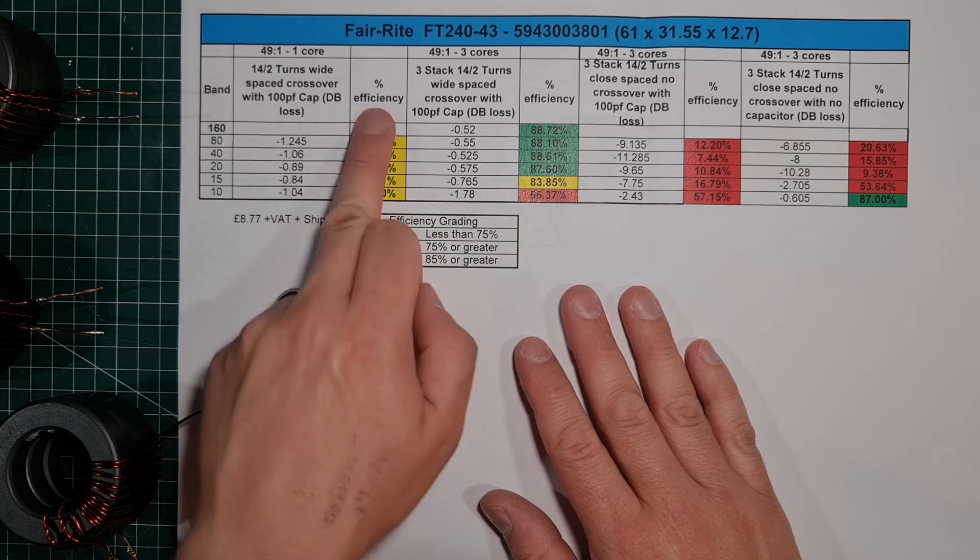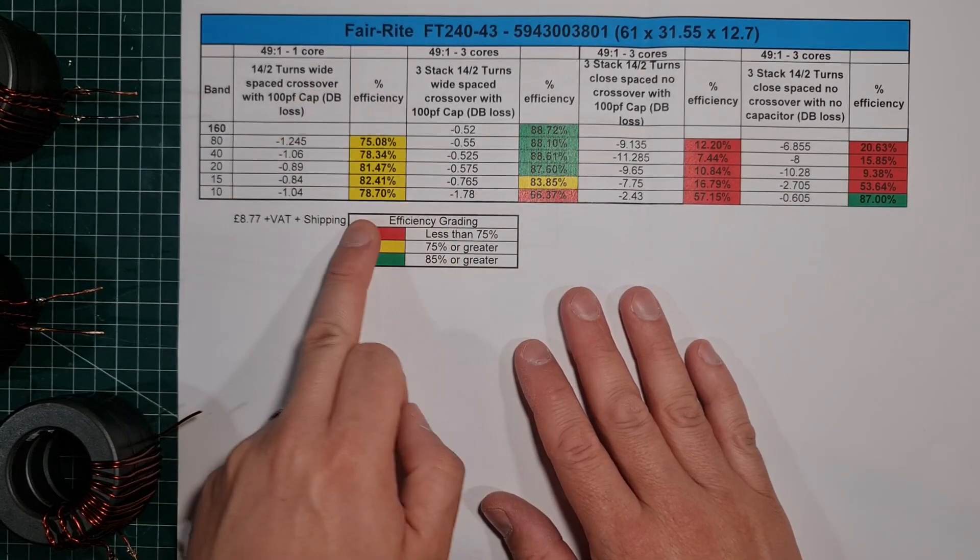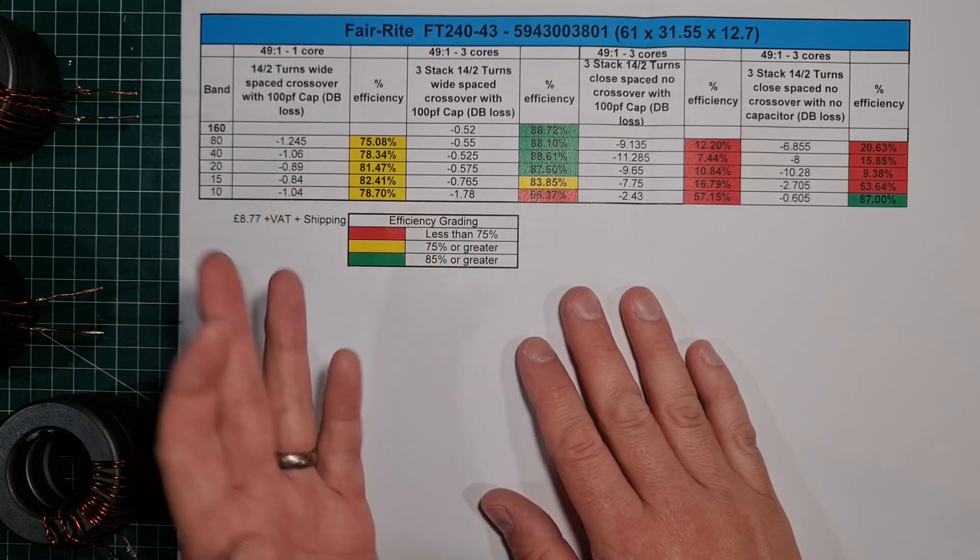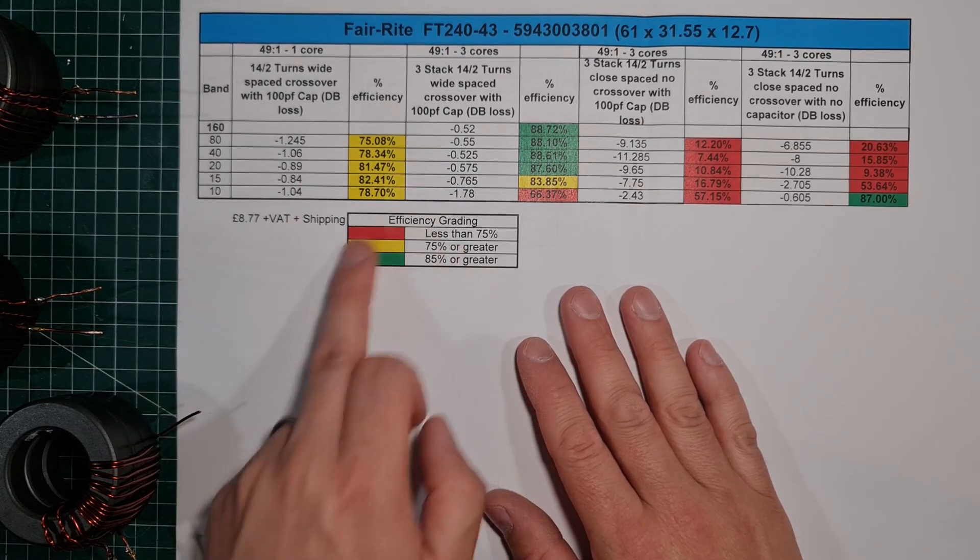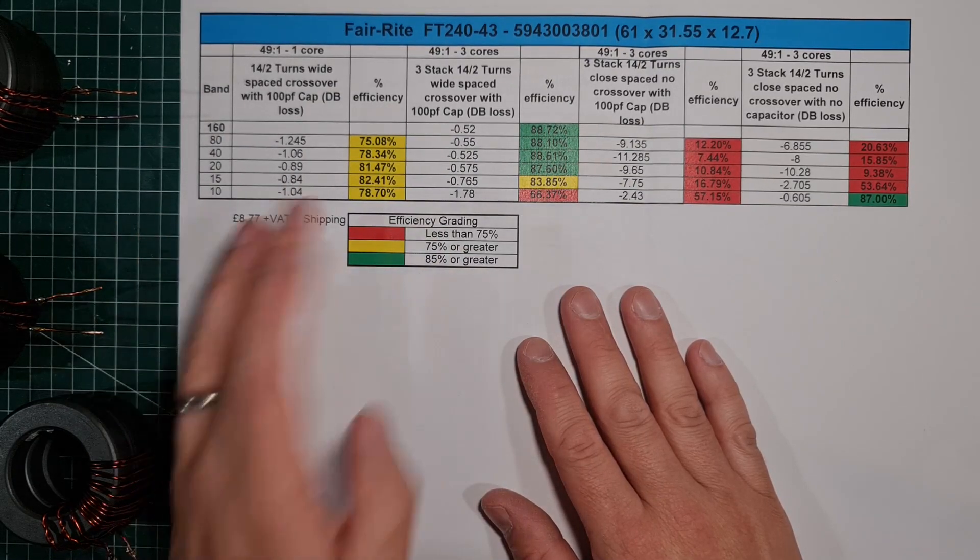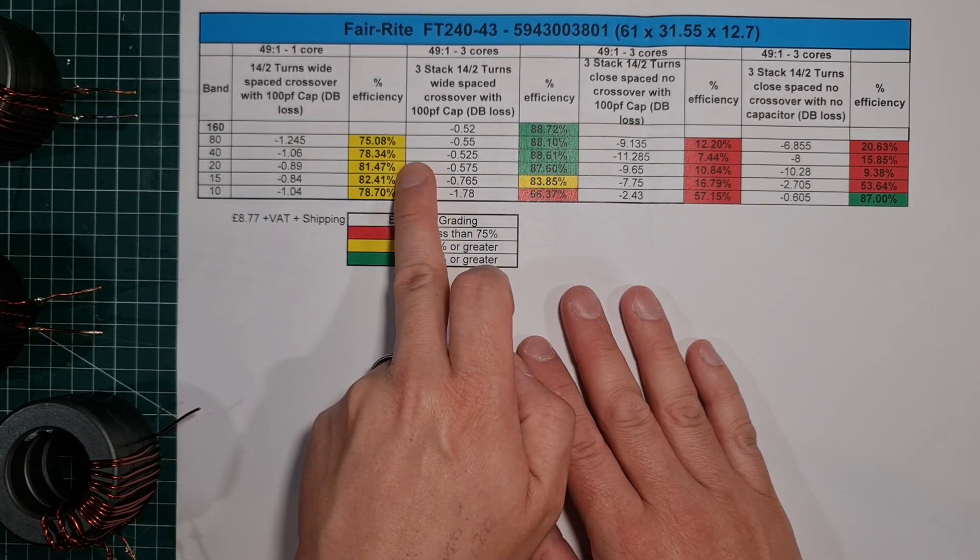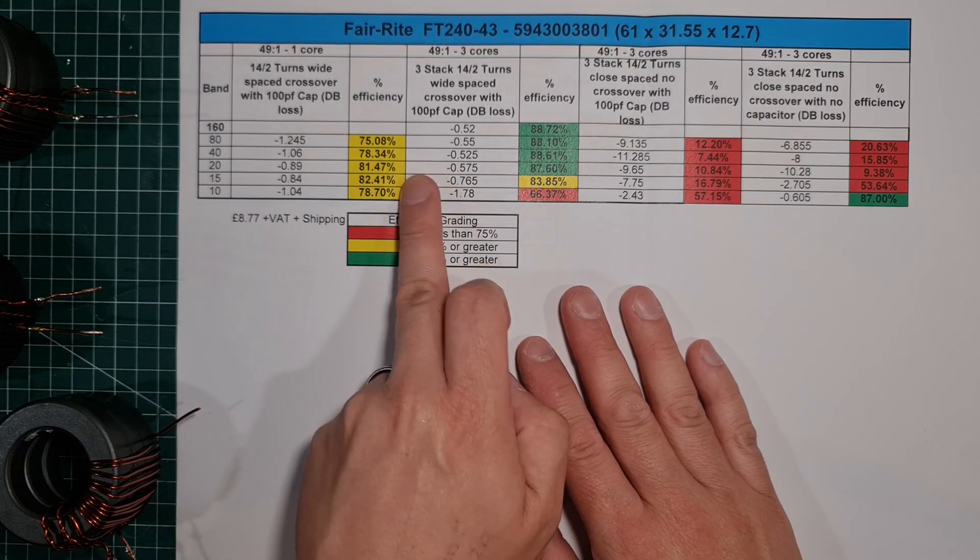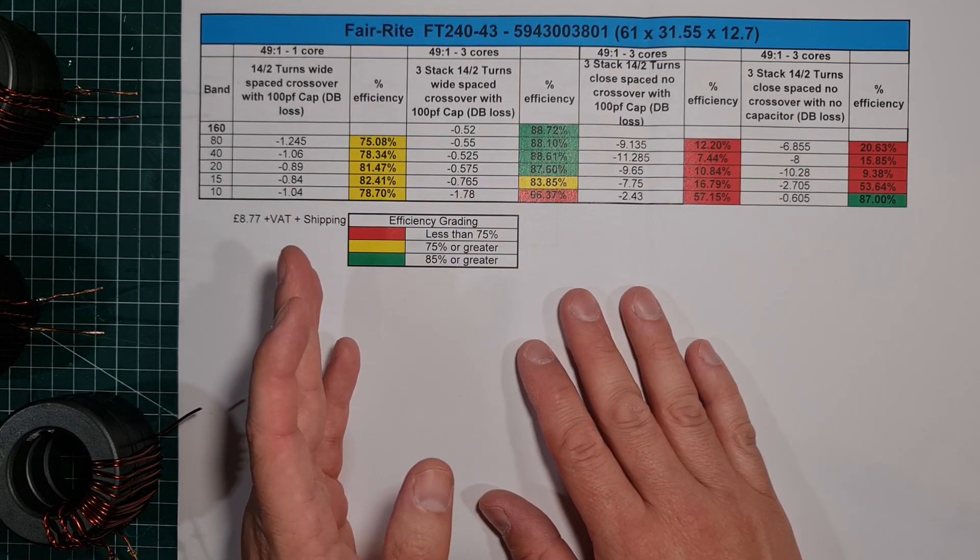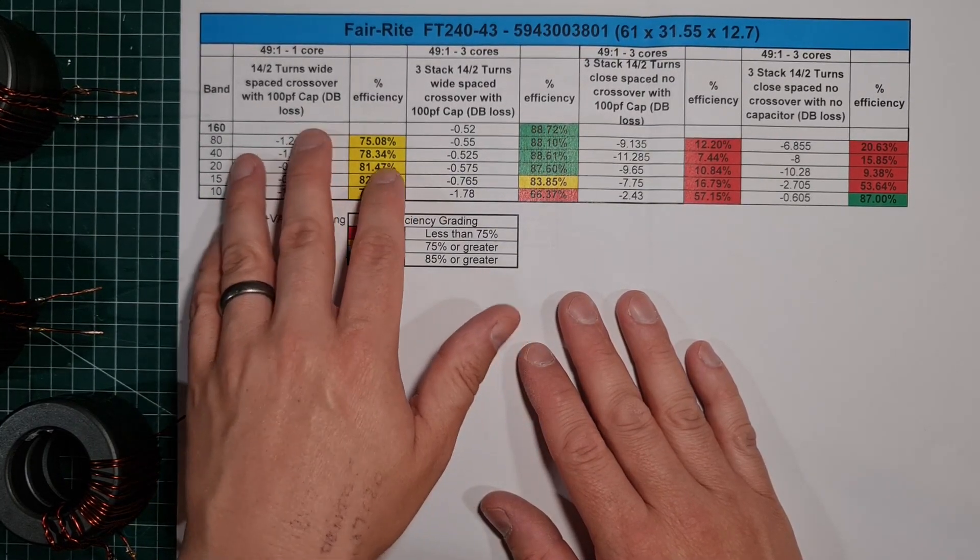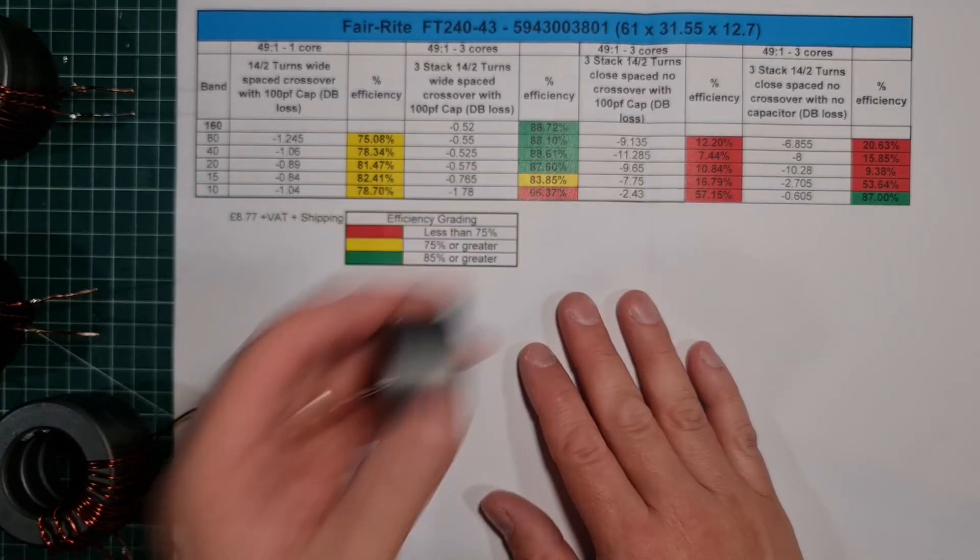This is your kind of standard NFED half-wave that people build, and you look at the efficiency, and it's not terrible. I've got this kind of grading system here, just for my benefit, but it's not actually bad. If you look at the higher bands up to 20 and 15, you're over 80%, but you could do a lot better.